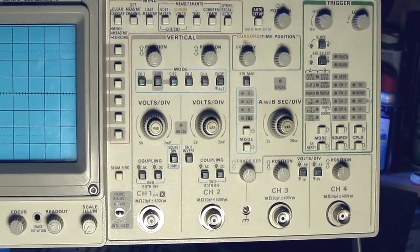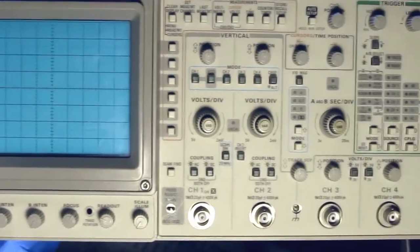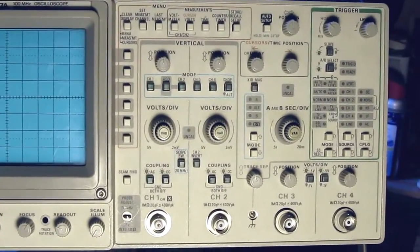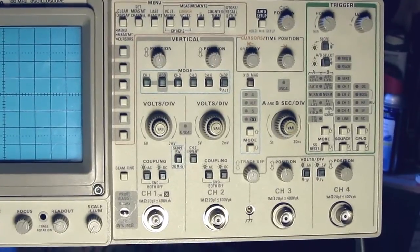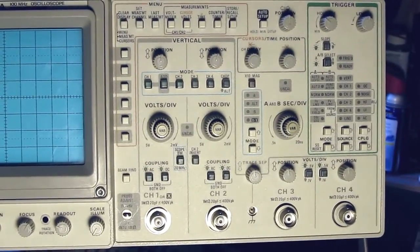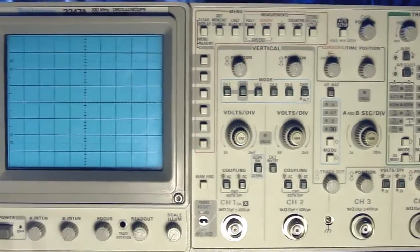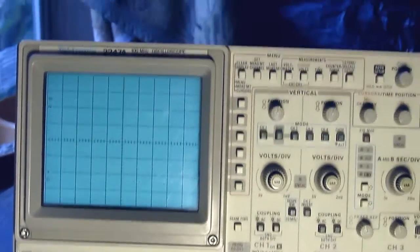As many knobs and buttons as there are, you'll find it's a little lacking when you know what other scopes, modern ones, can do and this can't. But anyways, I bought this 47a model because it has on-screen menu.